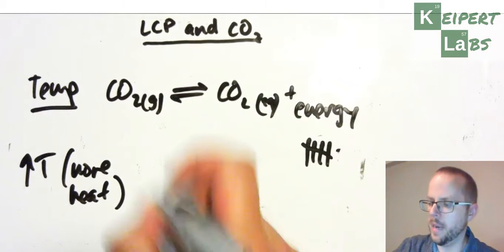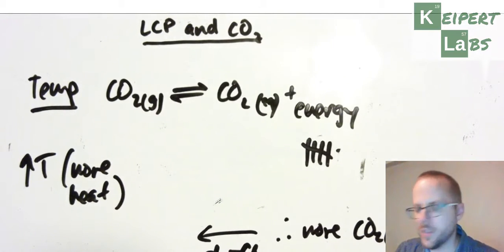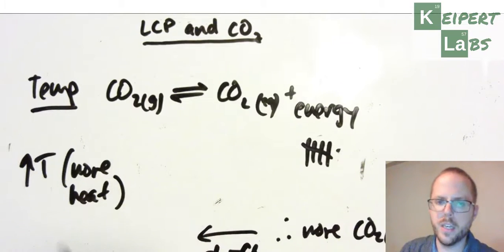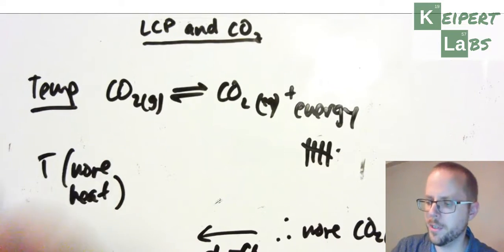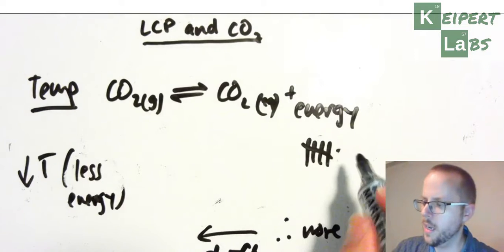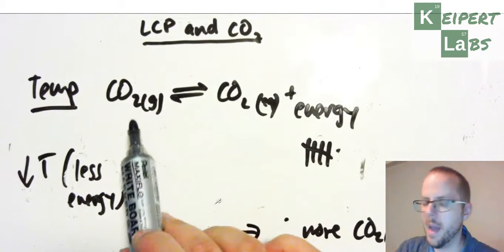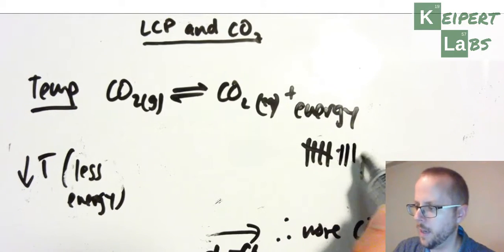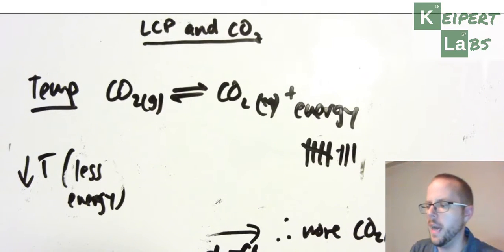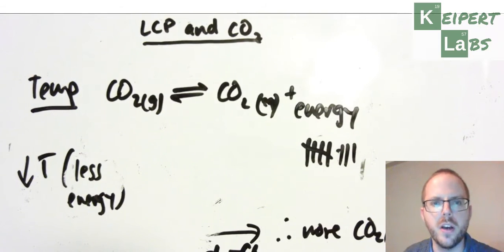So when temperature increases, we get more CO2 gas. Looking at the reverse: if we decrease the temperature, we have less of that energy on the products side, so the equilibrium shifts to the right to try and replace it — more gas dissolves to try and top the energy back up again. In both situations, whether we change the pressure or the temperature, we can use Le Châtelier's Principle to manipulate the equilibrium. Changes in temperature and pressure will cause shifts either to the left or right in this equation. Thanks very much for watching. Bye for now.